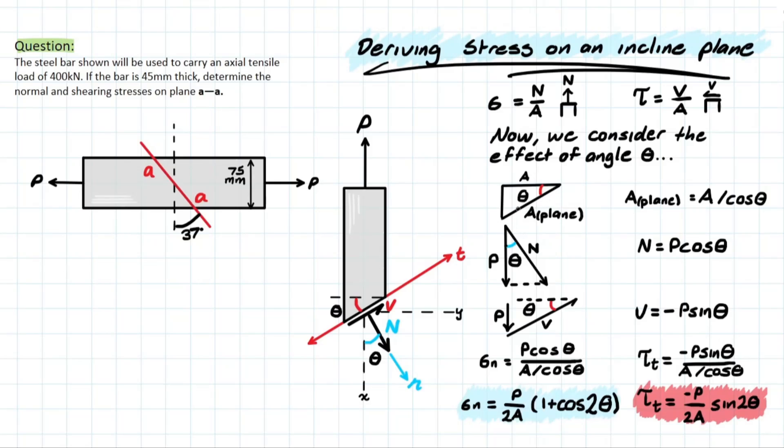So the area of our inclined plane is going to be a different size than the area parallel to that y-axis here. And how do you get that? Well we consider the angle theta, and using cos we have the adjacent over the hypotenuse, and we can derive that the area of the plane is going to be equal to A over cos theta.